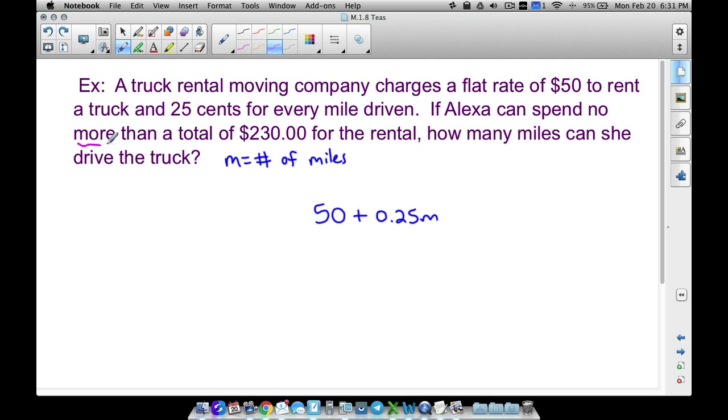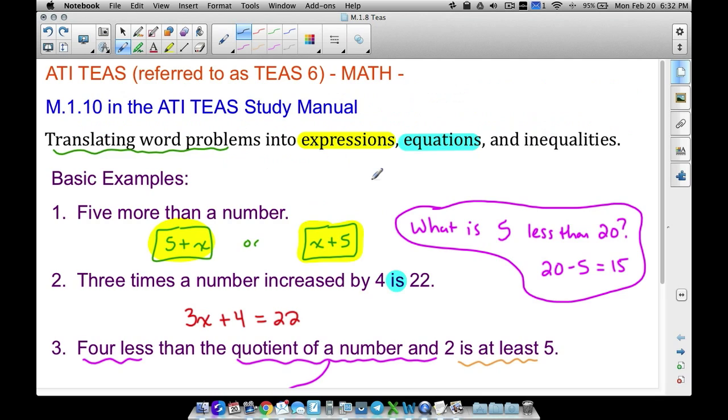If Alexa can spend no more than a total of 230 bucks. No more than. If you can have no more than four slices of pizza, if somebody says hey you can have no more than four slices of pizza, that means you can have four, three, two, one, or none. So no more than means less than or equal to. And we want to be less than or equal to the $230. So this right here, 50 + 0.25M ≤ 230. Notice again, the fifty represents dollars, the two thirty represents dollars, and since we wrote 0.25, yes that's 25 cents, but that's the correct way to write 25 cents in dollars.